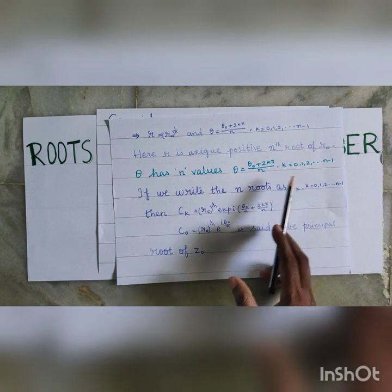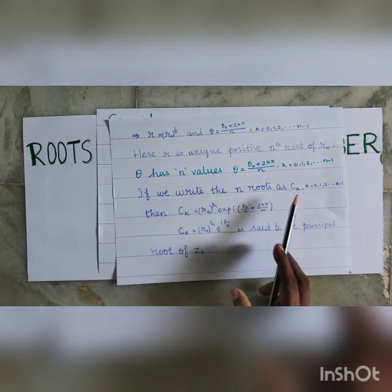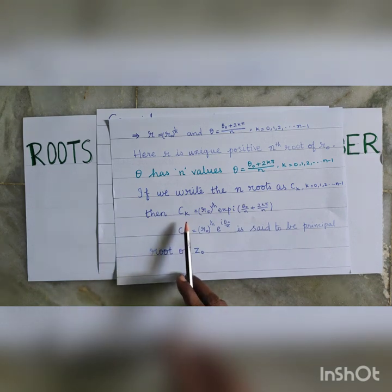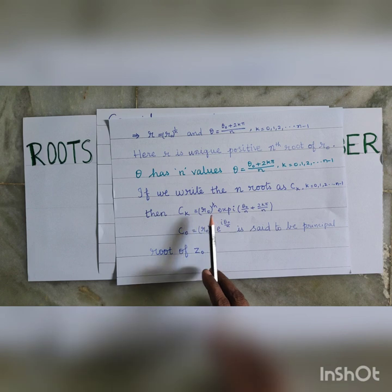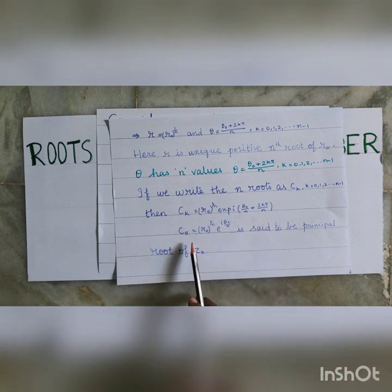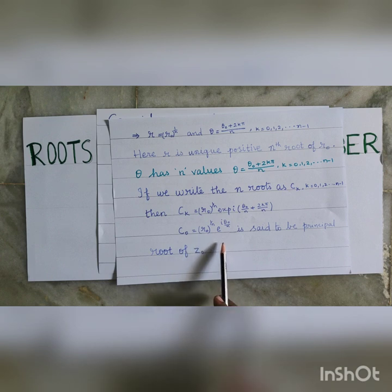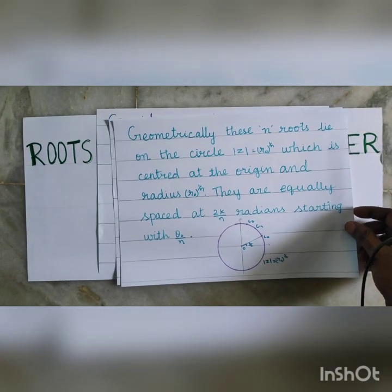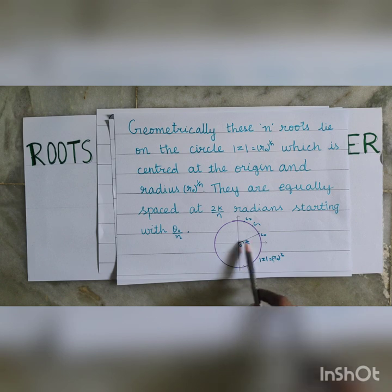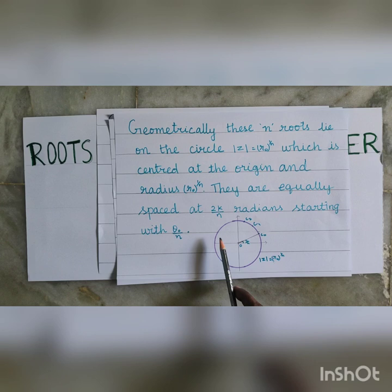If we write the n roots as Ck, k taking the values 0, 1, 2, etc., up to n minus 1, then we can write Ck equal to R0 power 1 by n into exponential i times theta 0 by n plus 2k pi divided by n. C0 equal to R0 power 1 by n times e power i theta 0 by n is said to be the principal root of Z0. Geometrically, these n roots lie on a circle with modulus of Z equal to R0 power 1 by n, centered at the origin with radius R0 power 1 by n. They are equally spaced at 2 pi by n radians apart, starting with theta 0 by n.